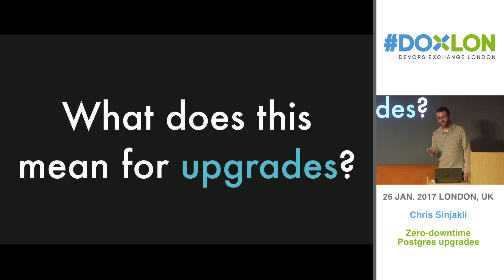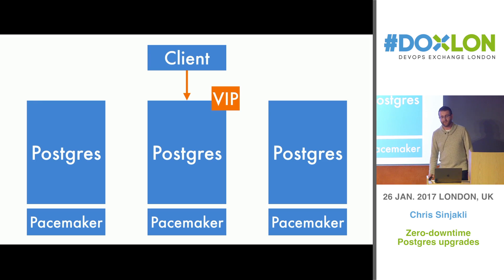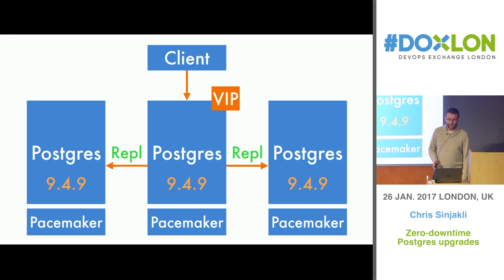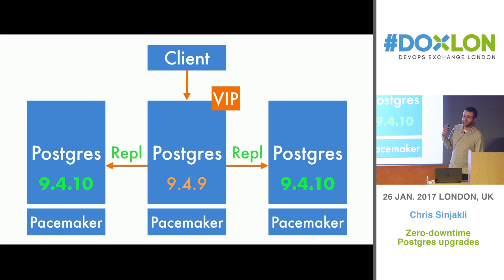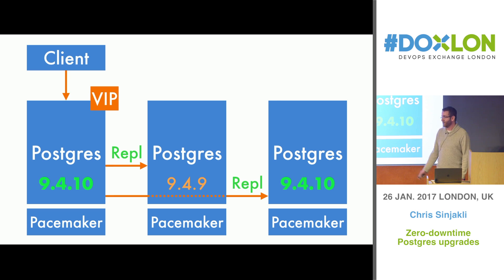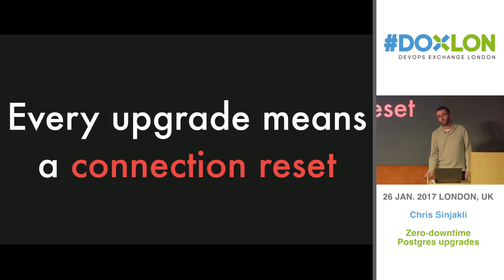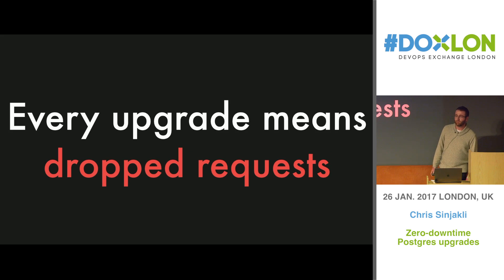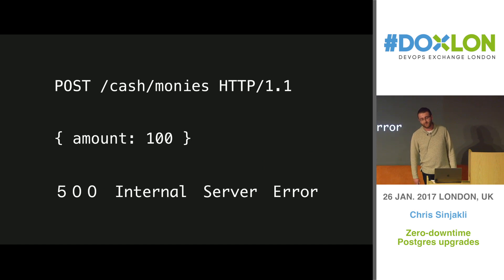So what does it mean for upgrades? Let's look at a typical upgrade — say you're running Postgres 9.4.9 and you want to get to 9.4.10. Postgres guarantees that between these rightmost version numbers, they will always keep the same replication format, so you can upgrade those replicas, no problem. The issue comes when you want to upgrade that middle one — you have to move the VIP. When the clients move to follow it, they will get connection resets. So every upgrade means connection resets, every upgrade means dropped requests, and every upgrade means our merchants see errors.